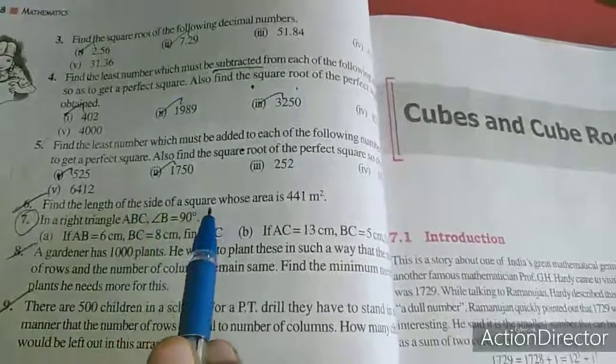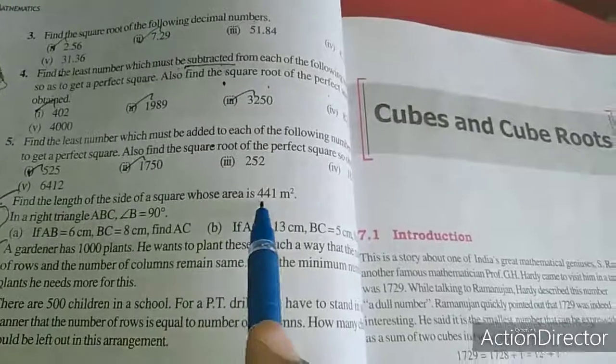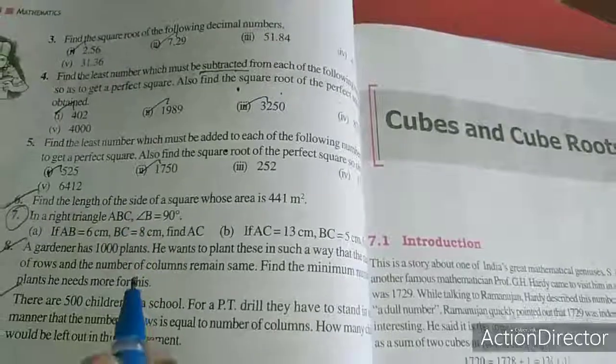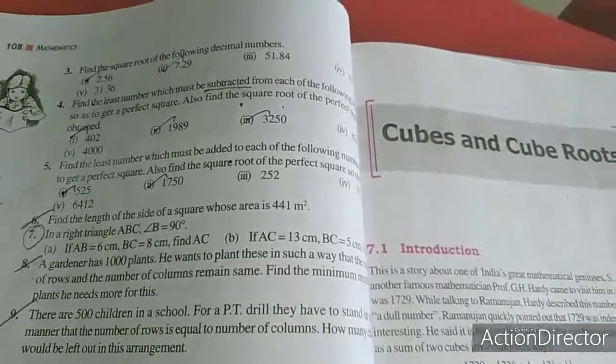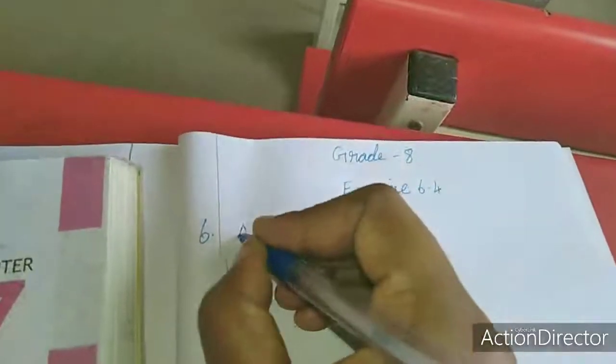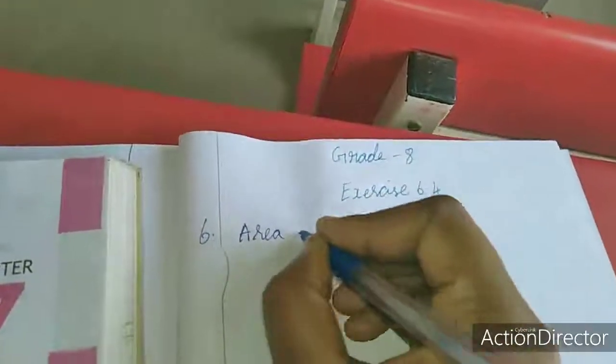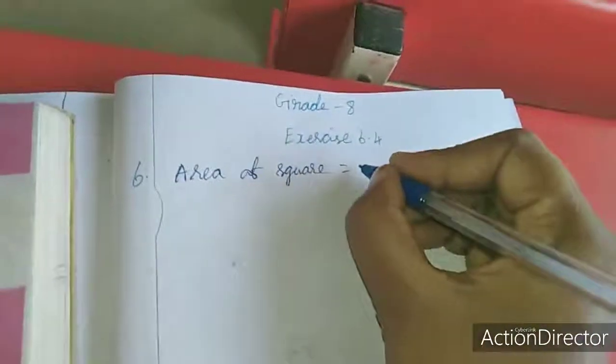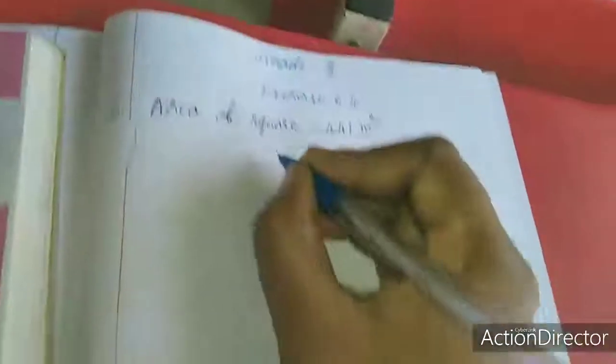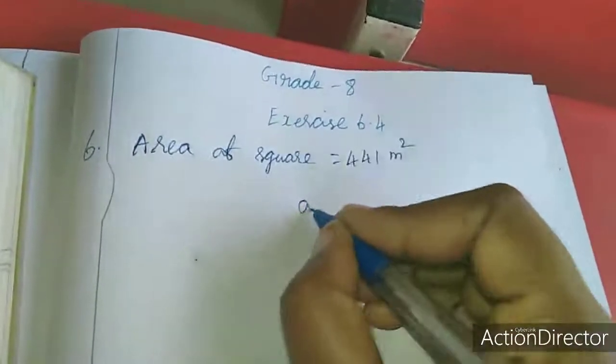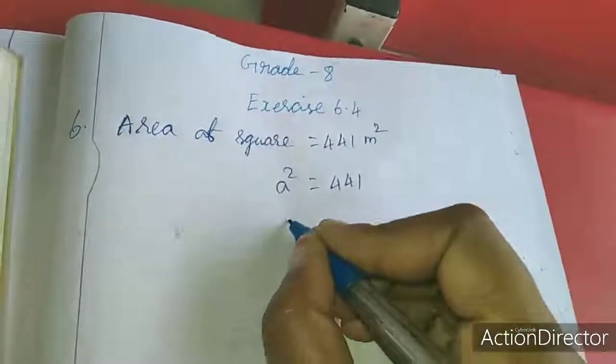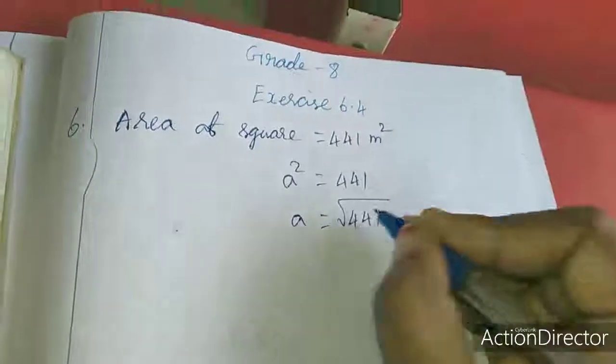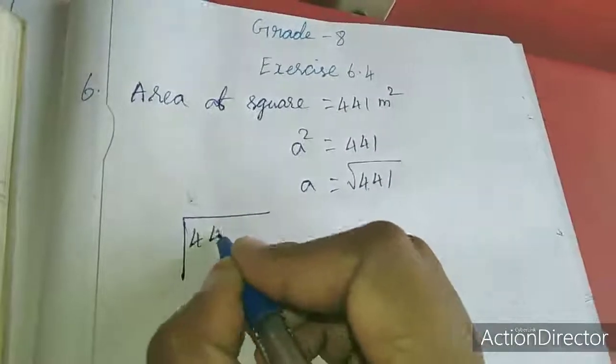See the 6th sum: find the length of the side of a square whose area is 441 meter square. Area they gave, they are asking about the side. Now we will work out the note. Area of square equal to 441 meter square. So area formula is a squared equal to 441. So we need the a value. So here it will come square root, so we want to find the square root for this.